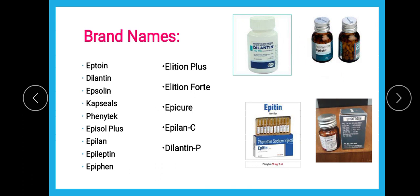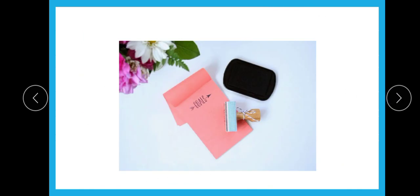The brand names of phenytoin include Eptoin, Dilantin, Epsoline, Episol, Epilan, Epileptine, Epiphen, Elytheon, Elytheon Fort, Epicure, Epilan-C, Phenitec, and Dilantin-P. The easy ones to remember are Eptoin, Dilantin, Epsoline, Episol, Epilan, and Epileptine. With this, we finish the important anti-epileptic drug phenytoin from the hydantoin class. Thank you.